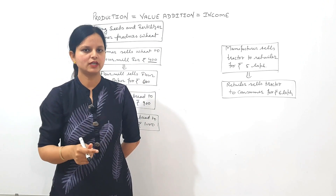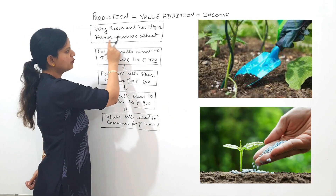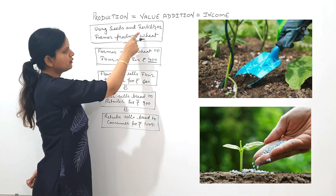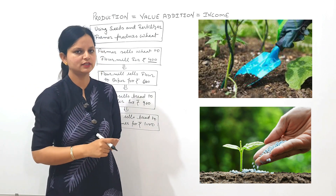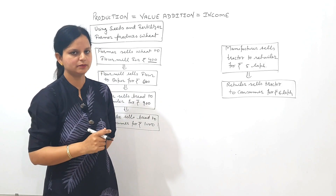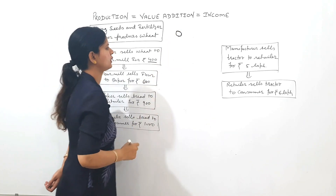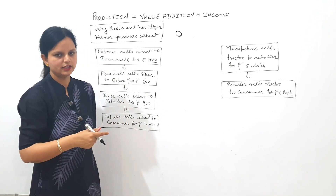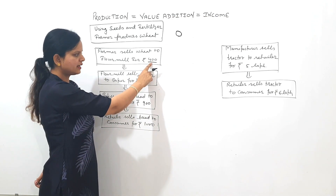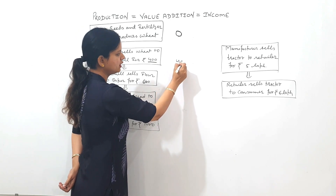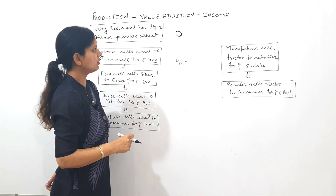Let's understand the concept of final goods and intermediate goods through an example. Using seeds and fertilizer, a farmer produces wheat. Seeds and fertilizer cost him nothing. The farmer converts seeds into wheat and sells to the flour mill for ₹400. So the farmer earns ₹400 — we can say he has done value addition of ₹400, or production of ₹400.